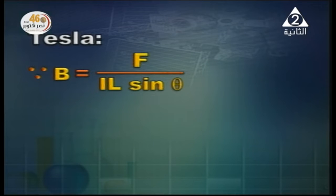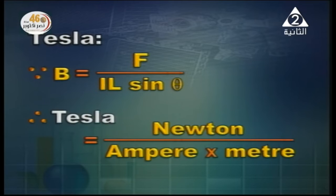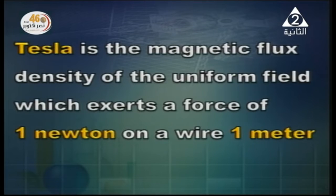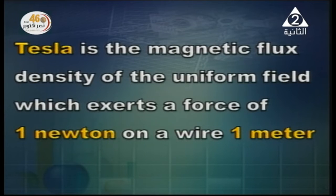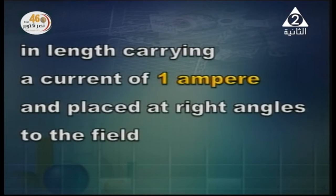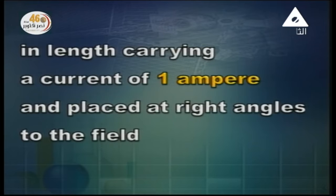Now we want to define Tesla — the unit of magnetic flux density. Tesla equals Newton per ampere-meter. Tesla is the magnetic flux density of a uniform field which exerts a force of 1 newton on a wire 1 meter in length, carrying a current of 1 ampere, and placed at right angles to the field. This gives us the definition of magnetic flux density and its unit, Tesla.